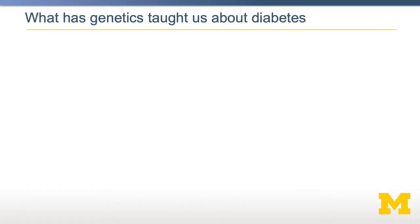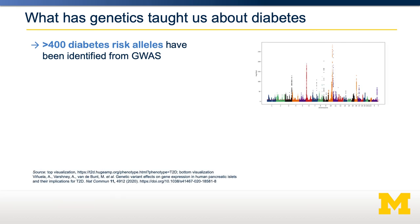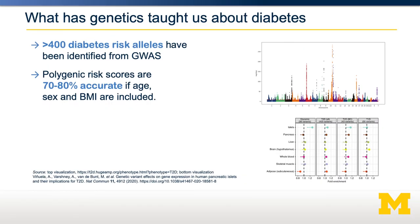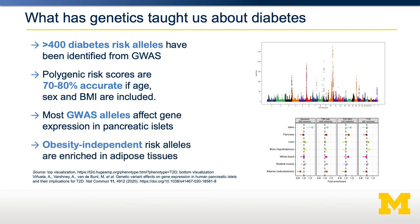So what has genetics taught us about diabetes? In addition to heritability studies, genome-wide association studies have identified more than 400 individual diabetes risk alleles, shown in a Manhattan plot. These alleles can be combined to generate a polygenic risk score. If you include age, sex, and BMI, these risk scores are about 70 to 80% accurate in predicting whether or not somebody will get diabetes. Looking at where these alleles affect gene expression, most GWAS diabetes alleles affect gene expression in the beta cell of the pancreas. This means the ability of the beta cell to continue compensating and producing insulin is critical to the genetic risk of diabetes. If you look at diabetes risk independent of obesity — for populations with the same obesity rates but differential diabetes risk — those alleles tend to be enriched in adipose tissue rather than the pancreas.